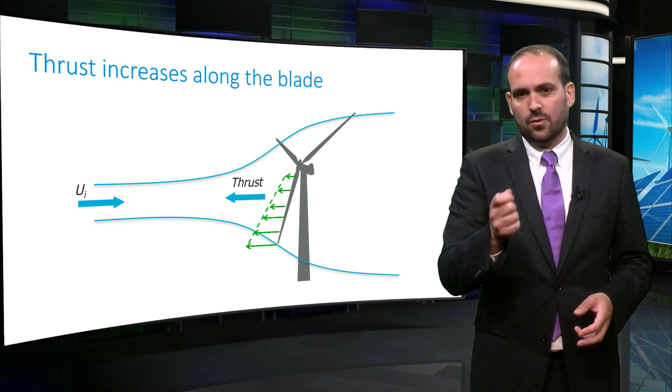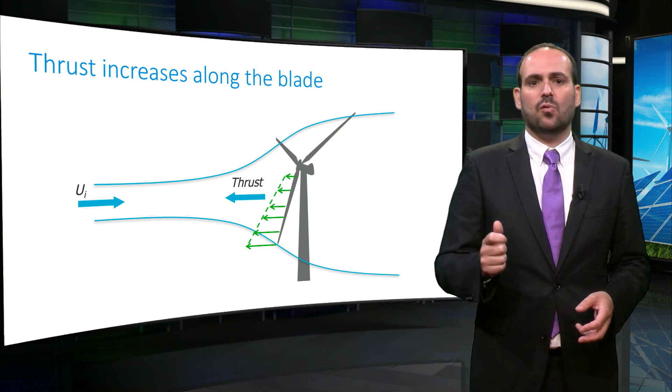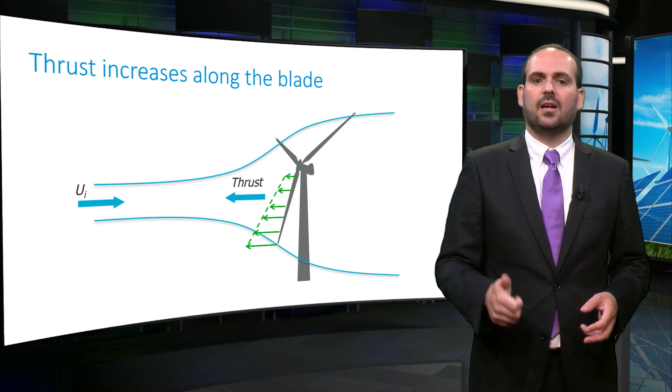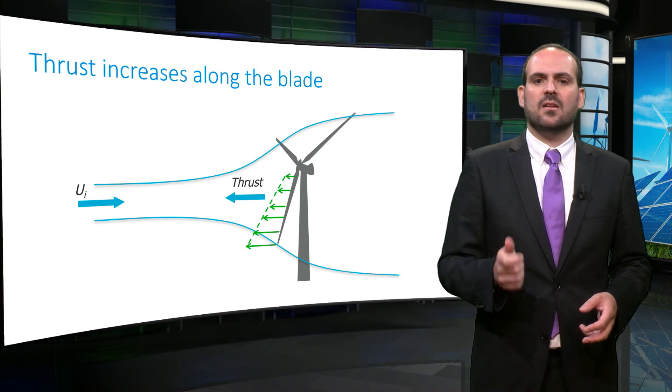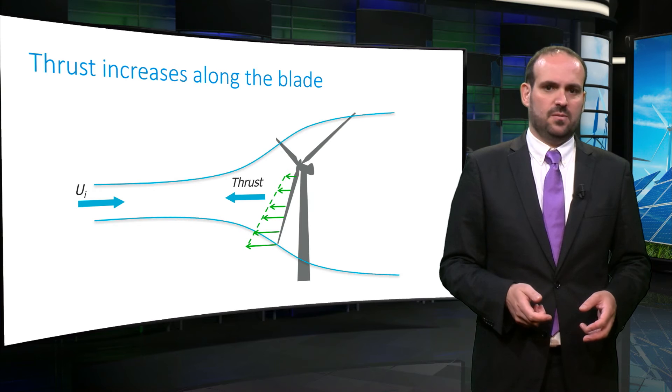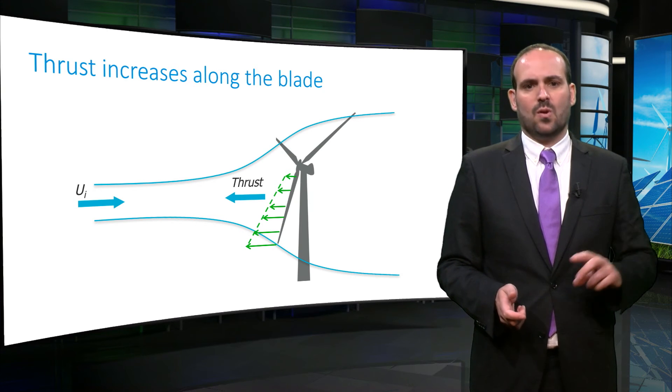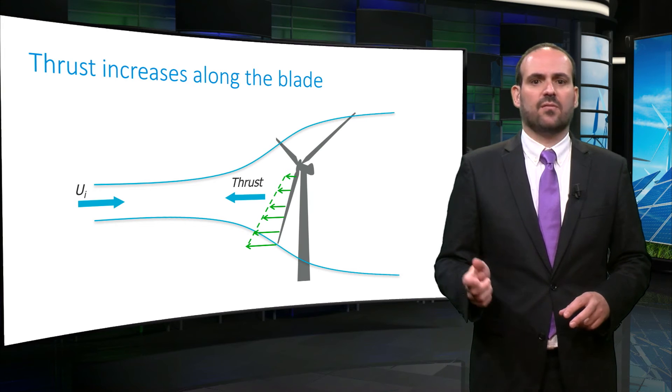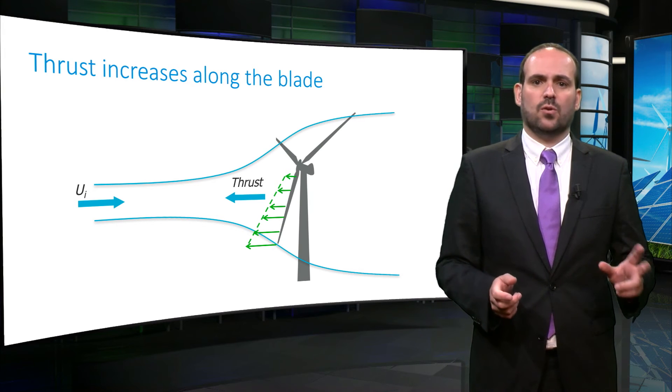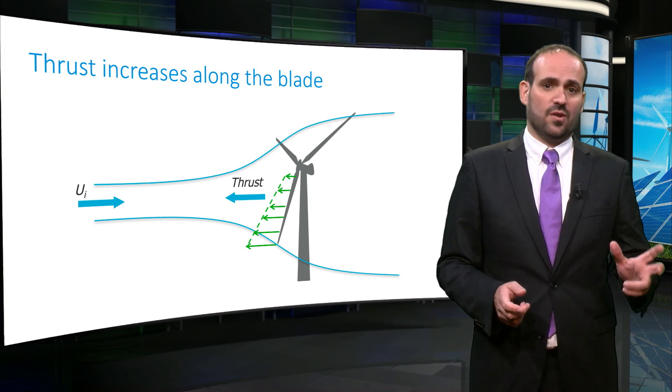As we look onto the blade, we can see that the outer regions of the blade sweep a large circumference. This circumference increases linearly with the radial position. Therefore, the loading along the blade has to increase linearly with the length of the blade, so that the average loading in each ring of the flow crossing the turbine is uniform.